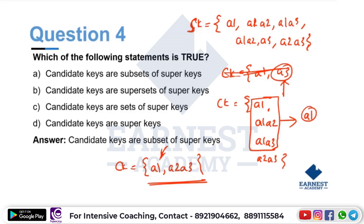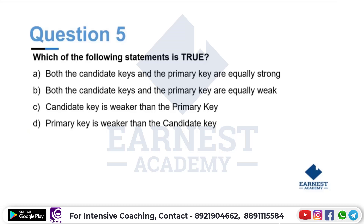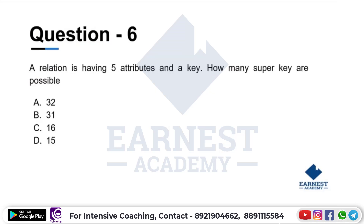Which of the following statements is true? Both candidate keys and primary keys are equally strong. Both candidate key and primary key are equally strong, candidate key is weaker than primary key, or primary key is weaker than candidate key? The answer is option A — they are equally strong, because both must be unique identifiers.